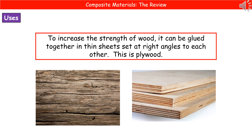Another common building material is wood. The trouble with wood is that it's prone to cracking in one direction. So to increase the strength of wood, we can make something called plywood. We glue together thin sheets of wood set at right angles to one another, which makes it much stronger because it can't just crack down one plane — it has a stronger layer at 90 degrees in each alternate layer.